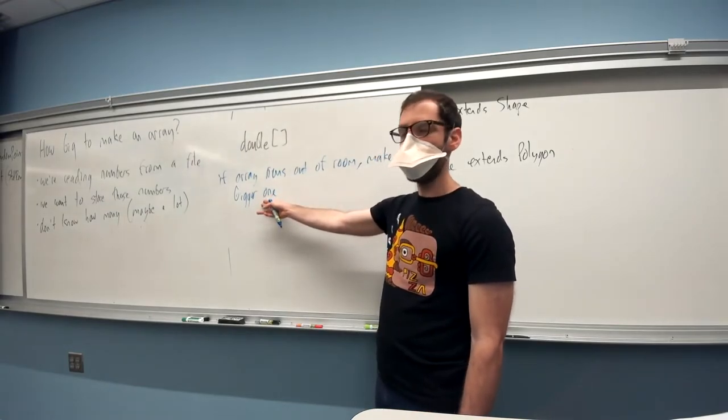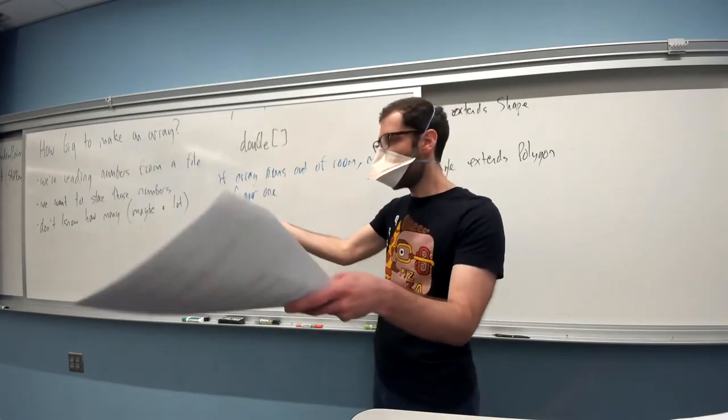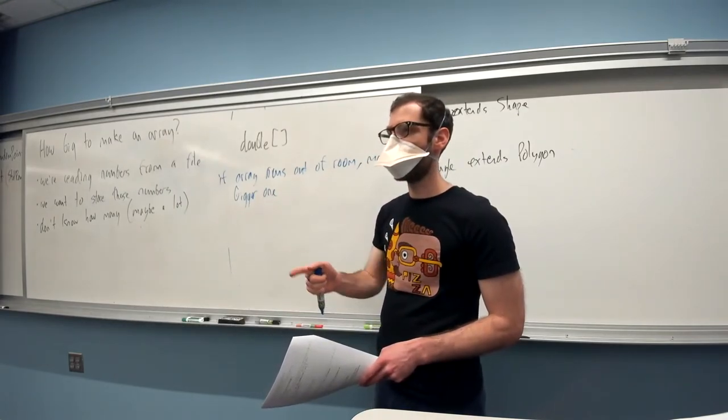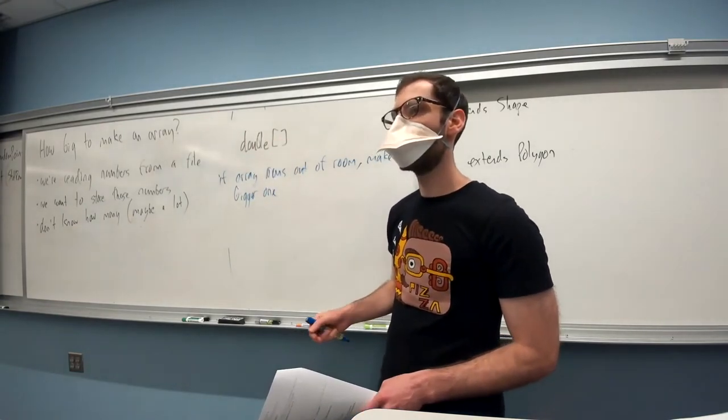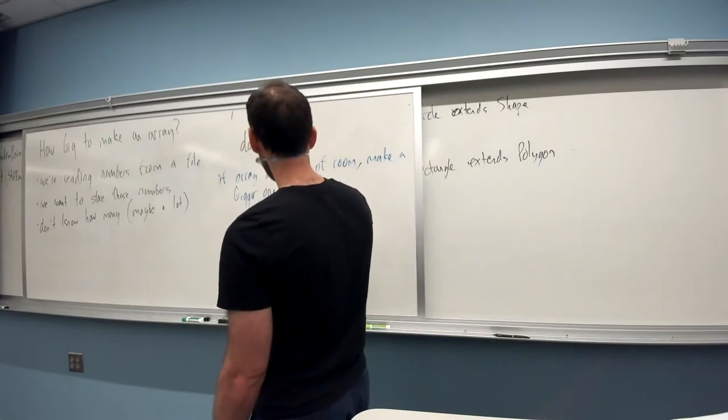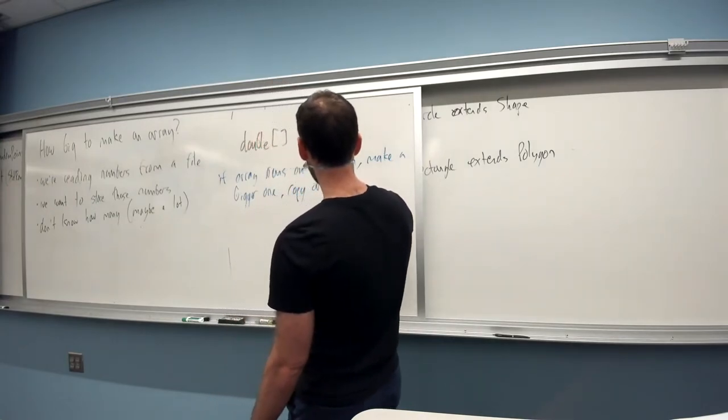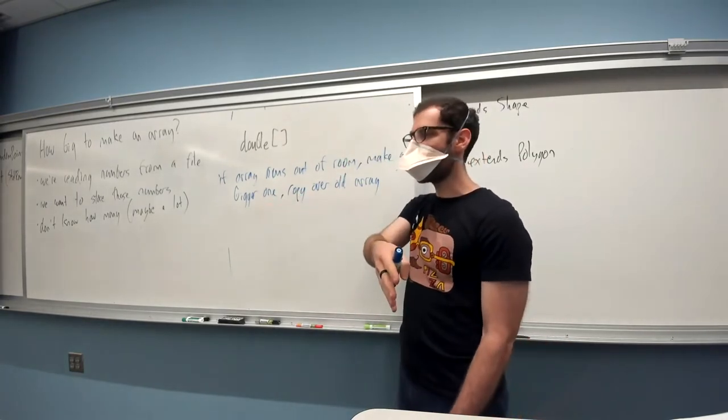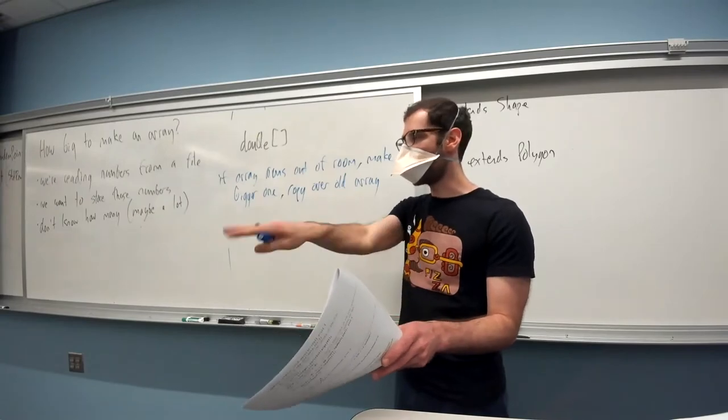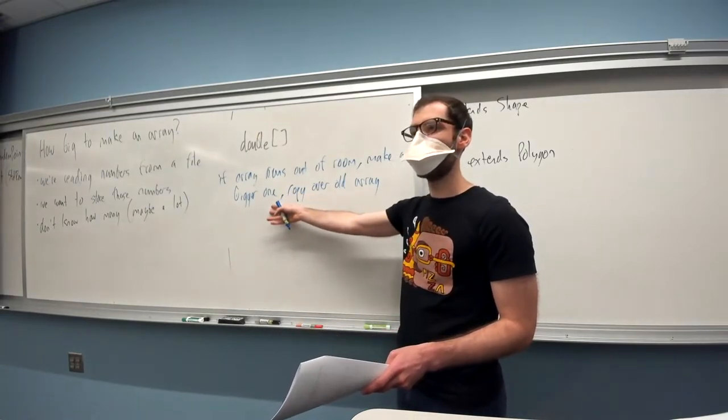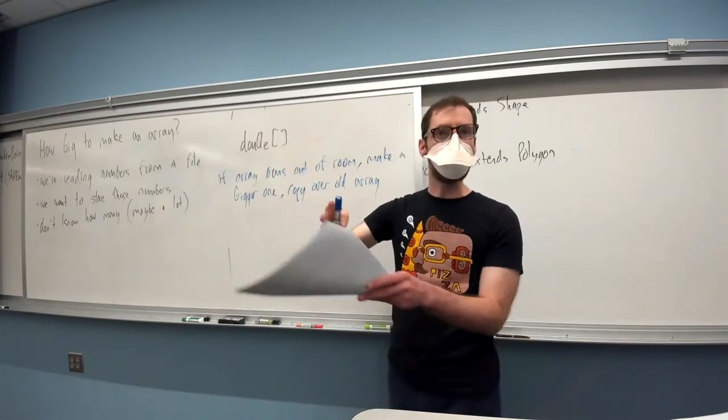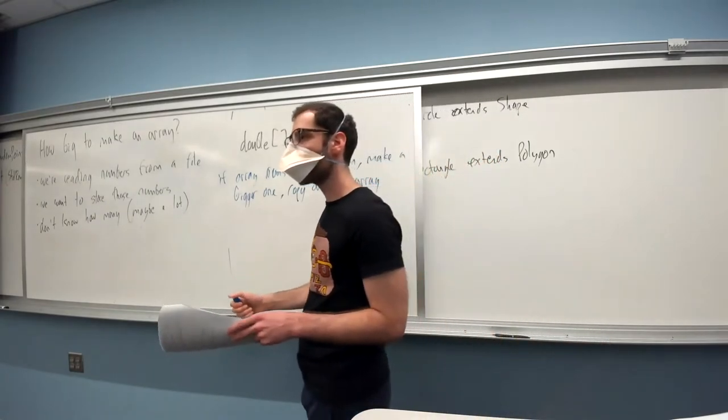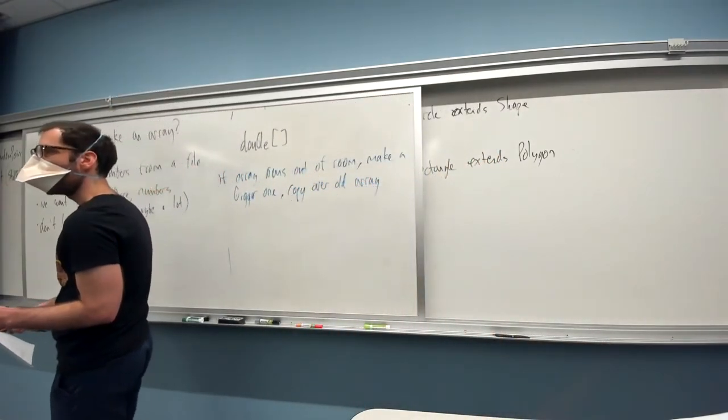So you're suggesting if our array runs out of room, make a bigger one? That's an interesting idea. When we make a bigger one, what steps, other than making the big array, is there anything that we would need to do? Yeah, Peter? We need to move all of the data from the first array to the second. Exactly. We would need to copy over all the things that were in the old smaller array that we're getting rid of to this new bigger one in order to be able to eventually end up with an array that has all the things in it.